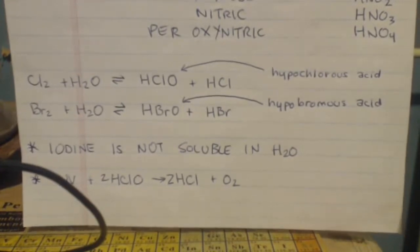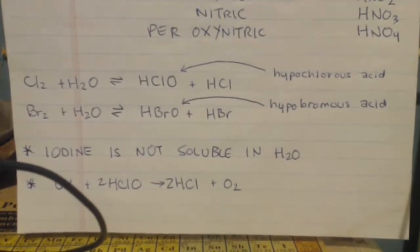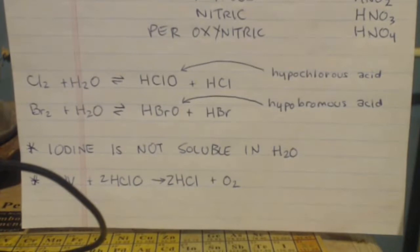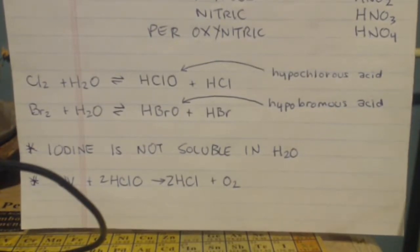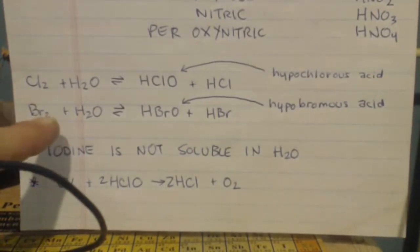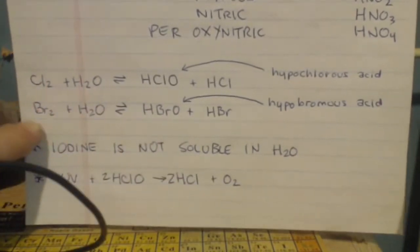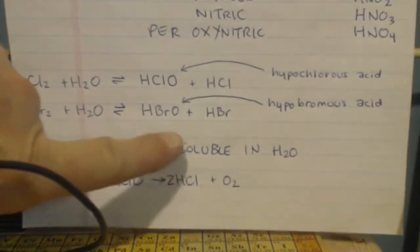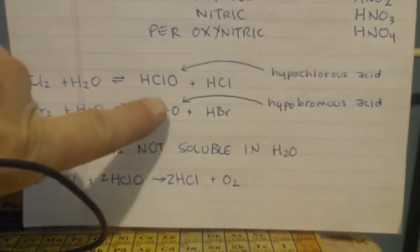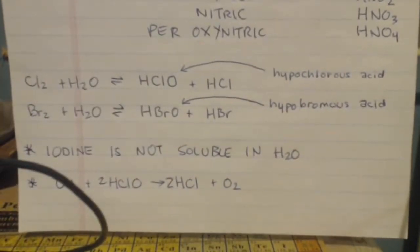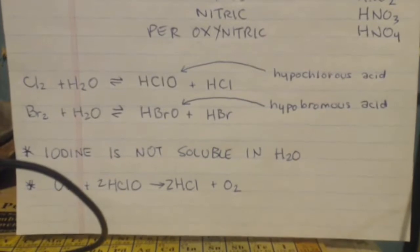But my point is, we did that in the video already. We made hypochlorous acid, right? We bubbled Cl2 through water. We also did this. It's the same exact thing, except we replaced the bromine and chlorine. Everything else is the same exact. You just take the Cl and put a Br, right? So we made hydrobromous acid. We did that in the video.